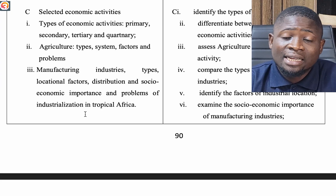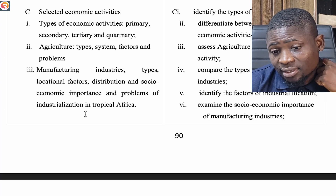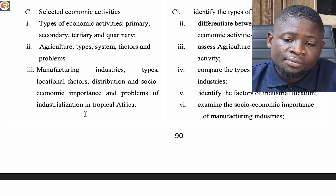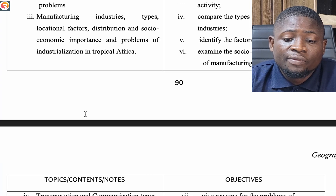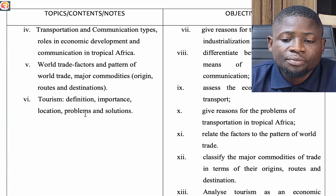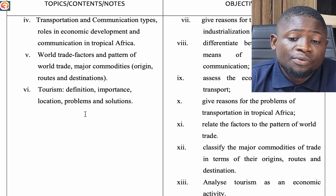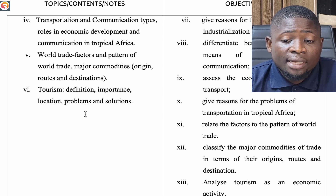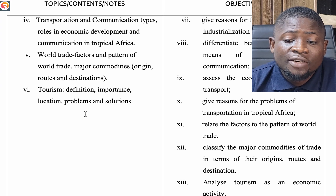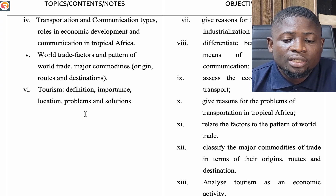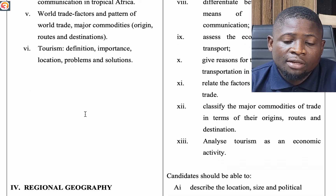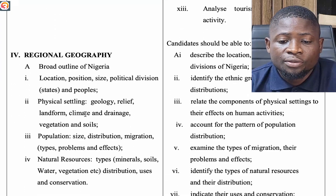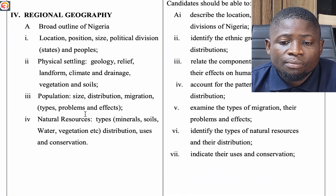Then selected economic activities: types — primary, secondary, tertiary, and contemporary. We cover agriculture — types, systems, factors and problems. Manufacturing industries — types, locational factors, distribution, socio-economic importance, and problems of industrialization in tropical Africa. Transportation and communication — types, role in economic development, and communication in tropical Africa. World trade — factors, patterns, major commodities, origins, routes and destinations. Tourism — definition, importance, location, problems and solutions.